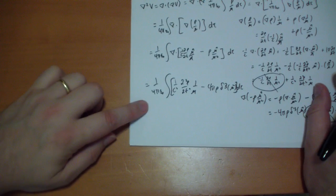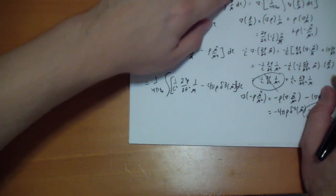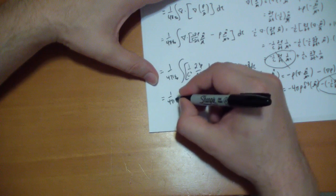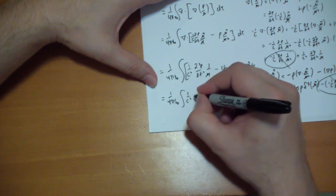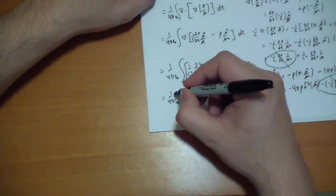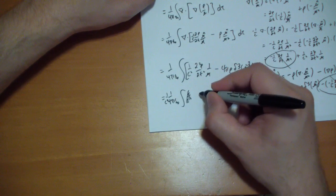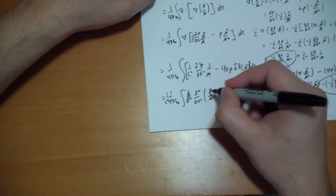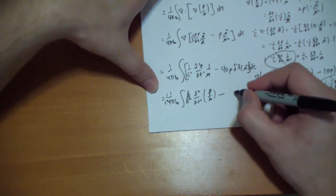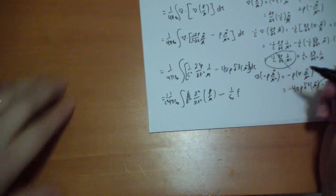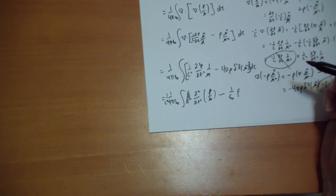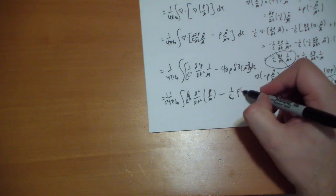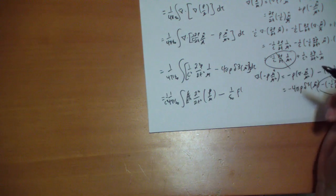Those two terms cancel each other out, so all that we're left with is 1 over 4π ε₀ times the integral of: 1/c² times d²ρ/dt² times 1/r, minus 4π ρ δ³(r-vector), dτ. The Laplacian of V gives us this, and if you squint at it, this term is 1 over 4π ε₀ times the integral — moving the 1/c² out front — of 1/c² times d²/dt² of ρ/r. The d²/dt² can come out, and since r has no time dependence, this is actually 1/c² times the second time derivative of V.